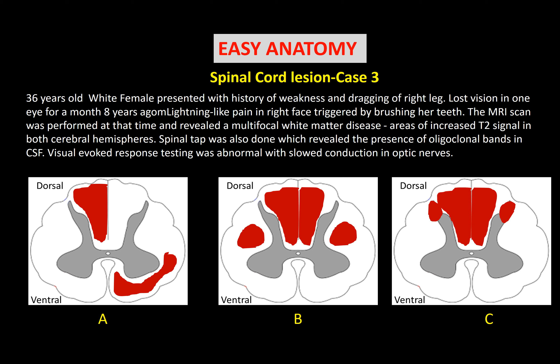Welcome to Easy Anatomy with spinal cord lesion case 3. This case scenario focuses on different forms of nerve injury. The history: this is a 36-year-old white female presented with history of weakness, dragging of the right leg, and lost vision — pay attention to this fact — lost vision in one eye.